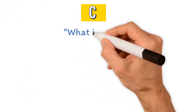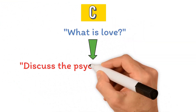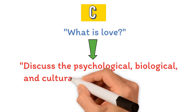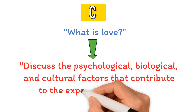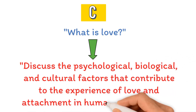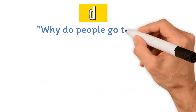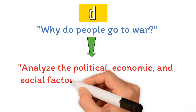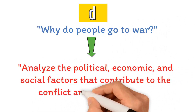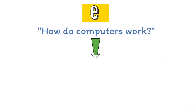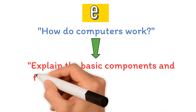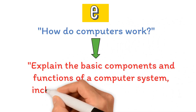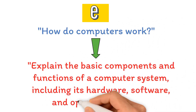C. 'What is love?' becomes 'Discuss the psychological, biological, and cultural factors that contribute to the experience of love and attachment in human relationships.' D. 'Why do people go to war?' becomes 'Analyze the political, economic, and social factors that contribute to the conflict and its aftermath.' E. 'How do computers work?' becomes 'Explain the basic components and functions of a computer system, including its hardware, software, and operating system.'